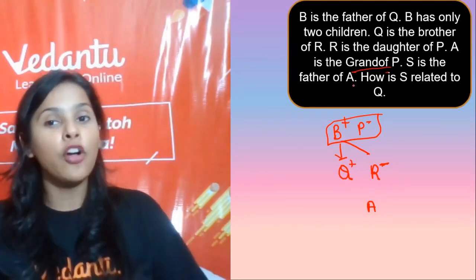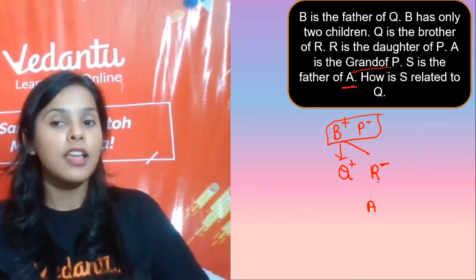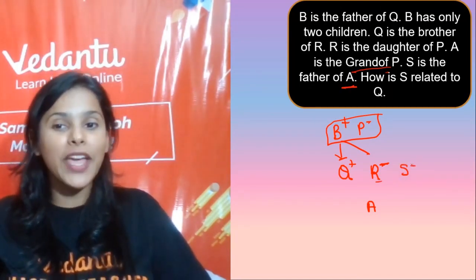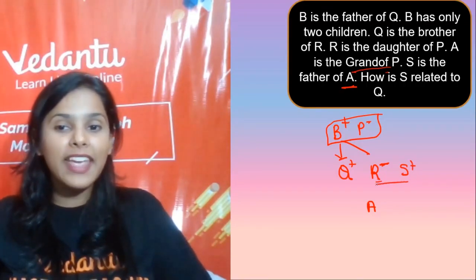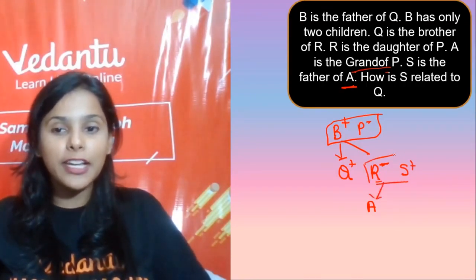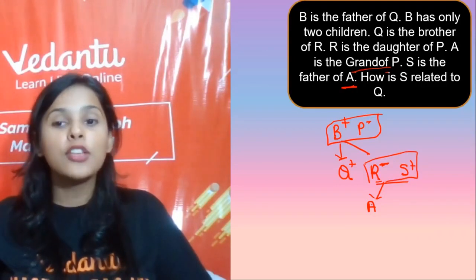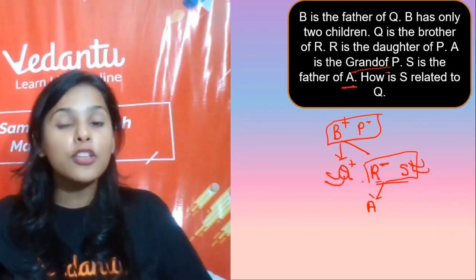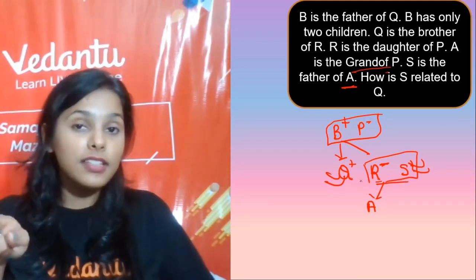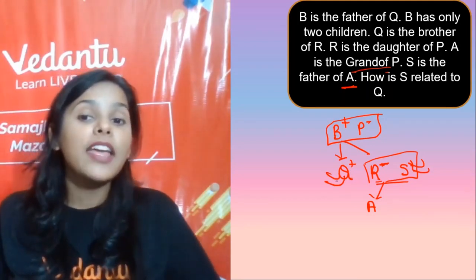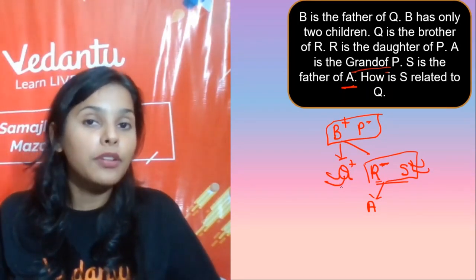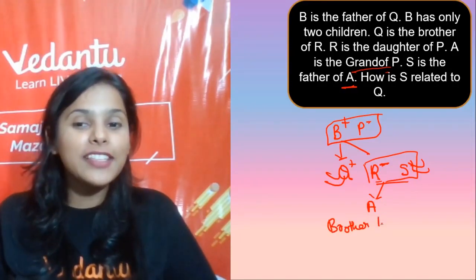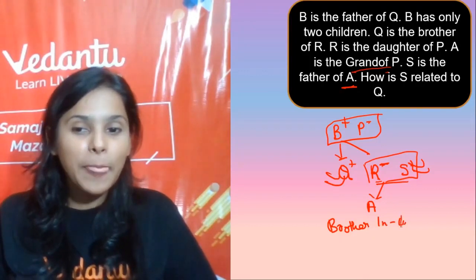S is the father of A, which means R and S are husband and wife — put them in a box. Now you have to find the relationship between Q and S. Q's sister's husband is the brother-in-law for Q. Let me know in the comments if you were able to solve this!